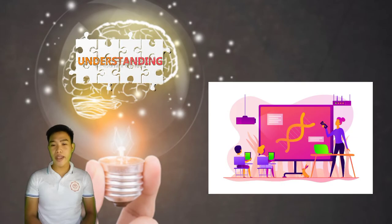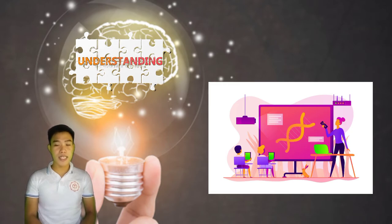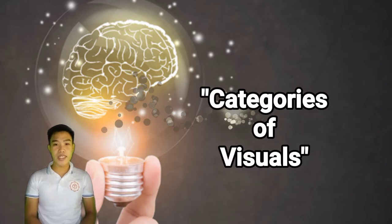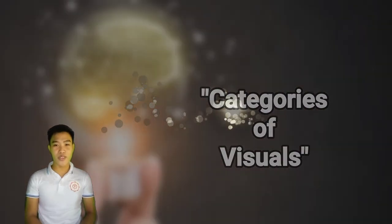displayed through broadcast media, and otherwise disseminated. In other words, as per my understanding, visual media is a type of data content that is being presented as representations, symbols, objects, etc., that mainly helps us to grasp the concepts and identify ideas being explained and introduced. Now let's proceed to the categories of visuals.